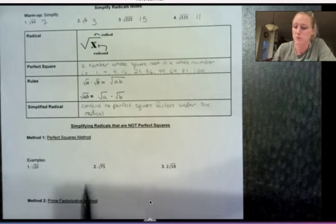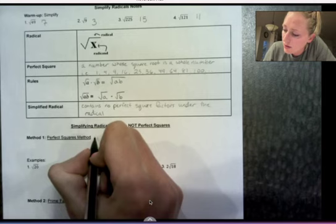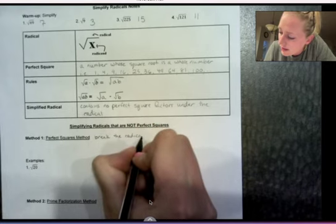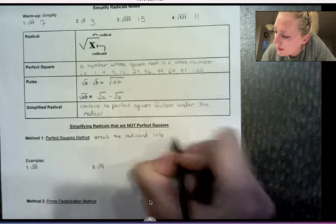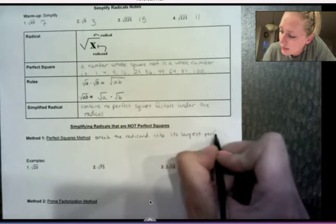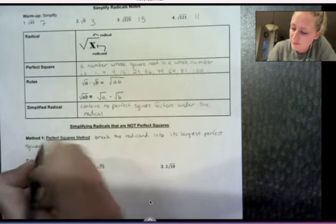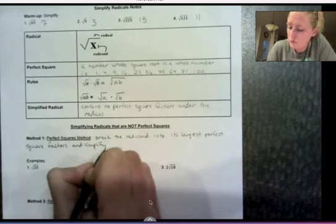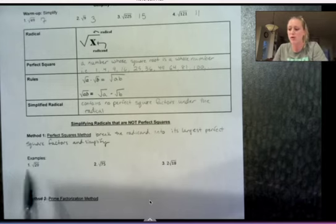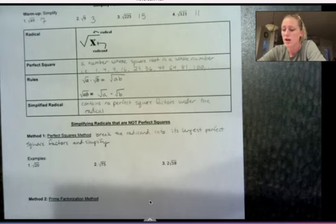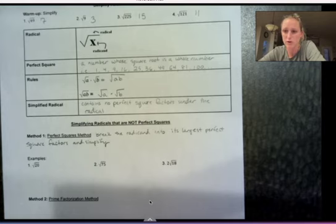So I'm going to show you two methods. The perfect squares method is to, we're going to break the radicand into its largest perfect square factors, and simplify. Okay, so here's what that means. Factors are numbers that go into this number evenly. So, for example, two is a factor of 20 because it goes into 20 ten times evenly, okay?